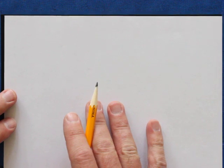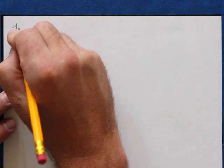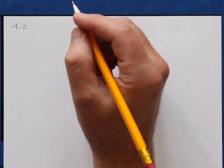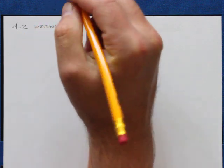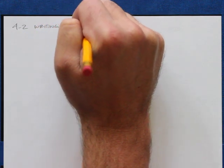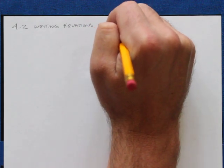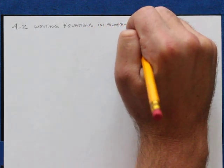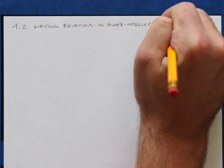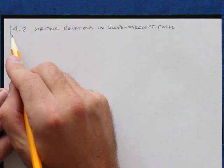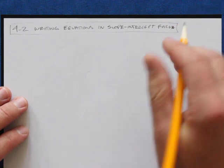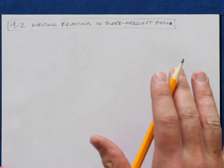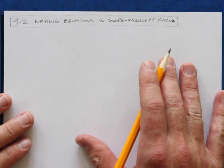Algebra 1, Section 4-2: Writing Equations in Slope-Intercept Form. So we've already been doing that a bit, but we're going to do it again. Much of this lesson is a review from 4-1, actually.